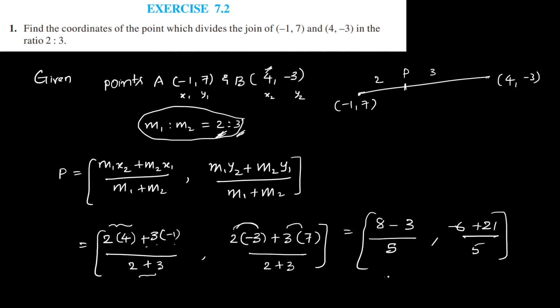So that will become 5 by 5 comma 15 by 5, so that equals 1 comma 3. That means the coordinates of the point which is dividing those two points is (1, 3).